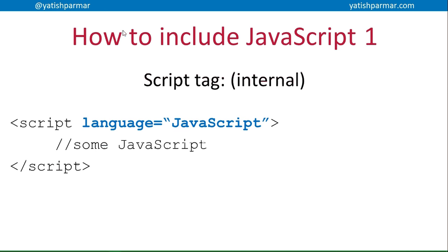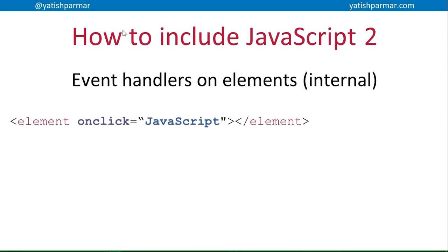Some of the code examples I show may omit that just to keep everything concise on screen during a demonstration. The second way of including JavaScript is with an event handler within an element. Whatever the element is, you can have, for example, an onclick — so when you click on it, you can put some JavaScript in the quotation marks, or you can put a call to a function.